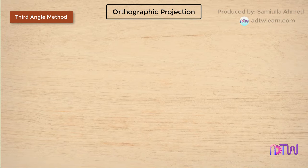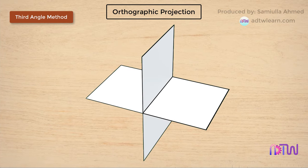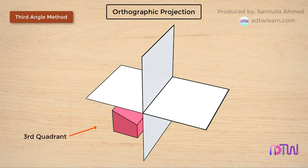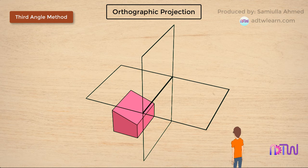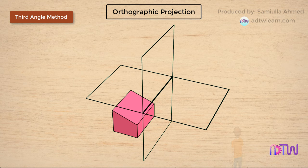In the third angle projection method, the object is placed in the third quadrant and the plane of projection lies between the object and the viewer. As the vertical plane of the third quadrant lies between the viewer and the object, the viewer cannot see the object directly. Therefore, we make the vertical plane transparent, and then we can see the front view, which is projected on the vertical plane lying between the viewer and the object.